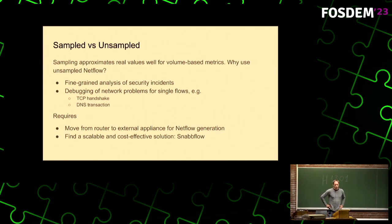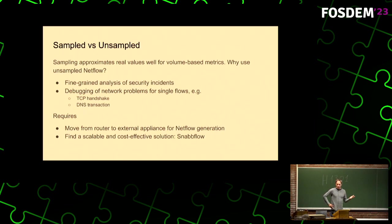As a network operator, we use unsampled NetFlow fairly often to troubleshoot network problems. If a customer complains they can't reach a certain IP address on the internet, we can actually look in our flows for the outgoing TCP SYN packet and see whether there's a TCP SYN-ACK coming back in. We can do this because we see every single flow, which is extremely useful.